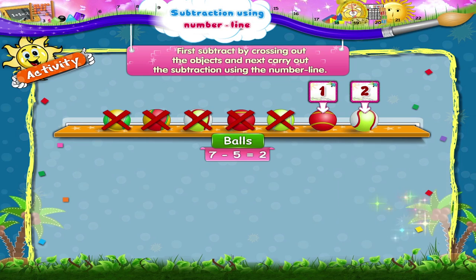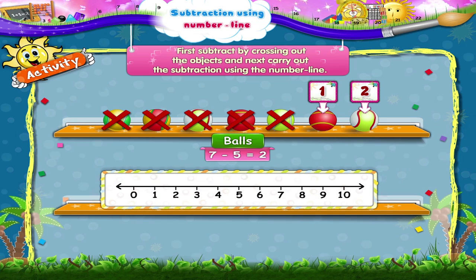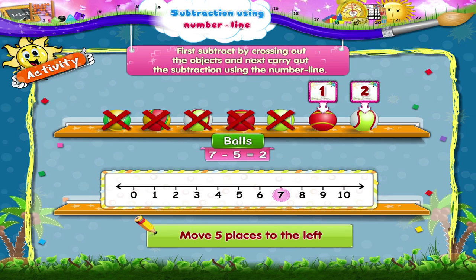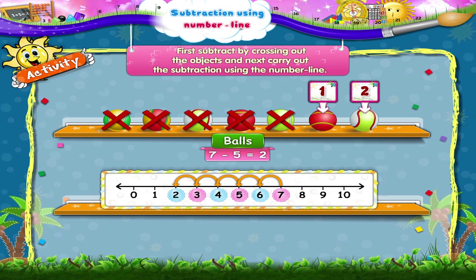Now using the number line, start at seven. Move five places to the left. One, two, three, four, five. We reach the number two. So seven minus five equals two.